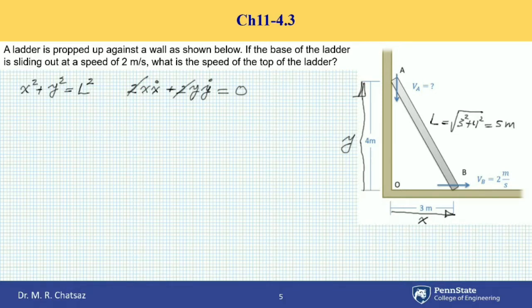I can simplify this equation and solve it for Y-dot, which is actually derivative of position of A, which by definition is VA. So if I solve this equation for Y-dot, I'm gonna get minus X over Y times X-dot.